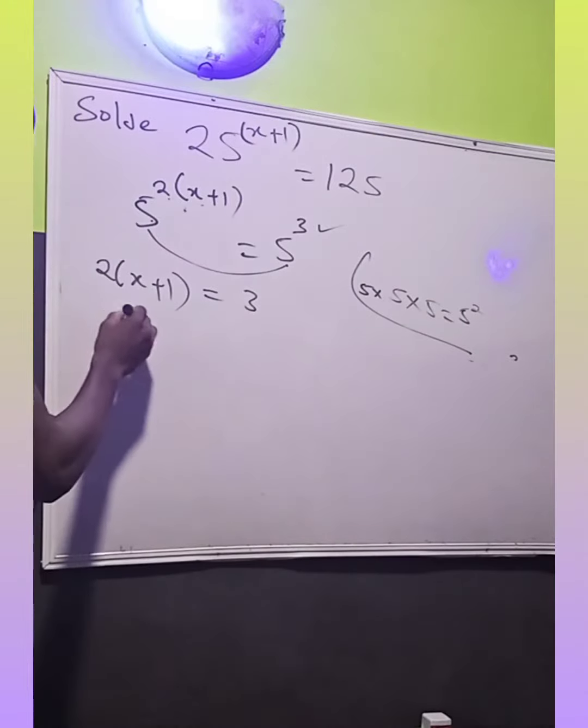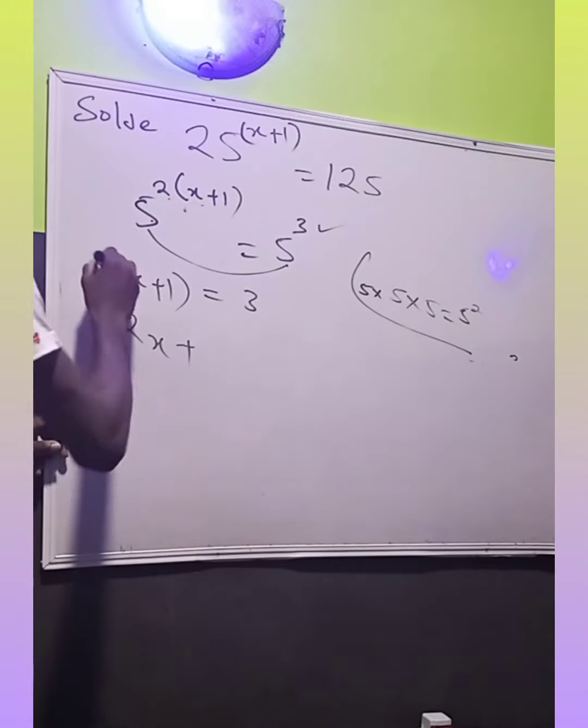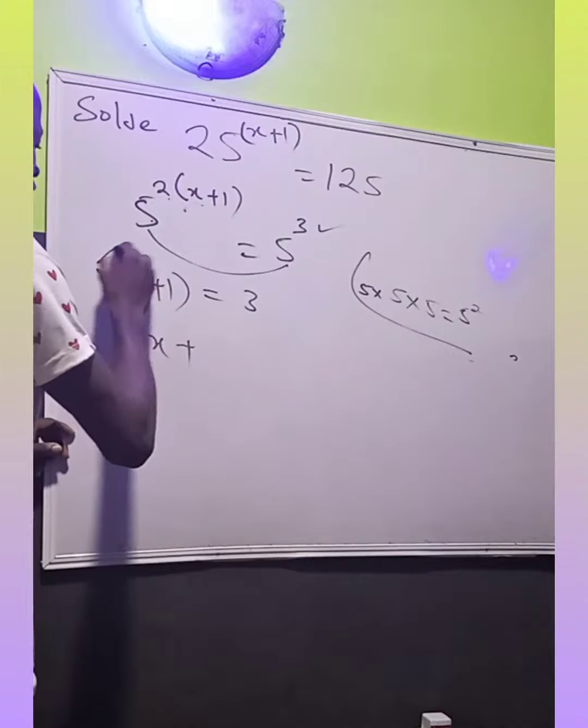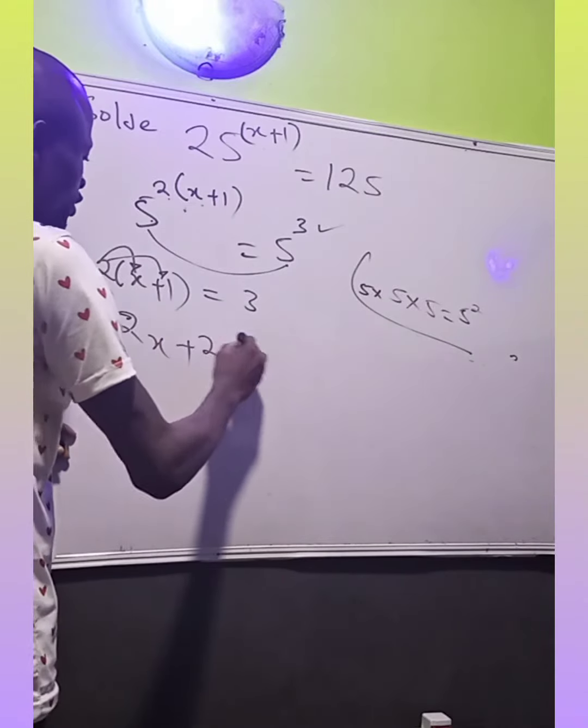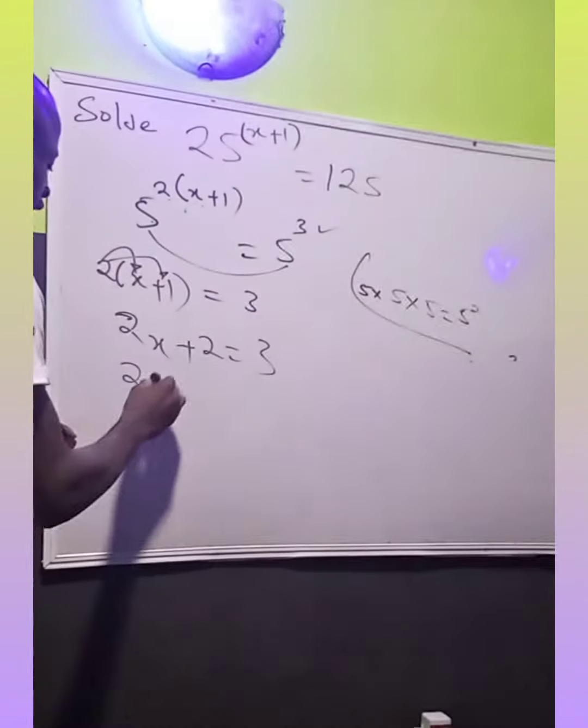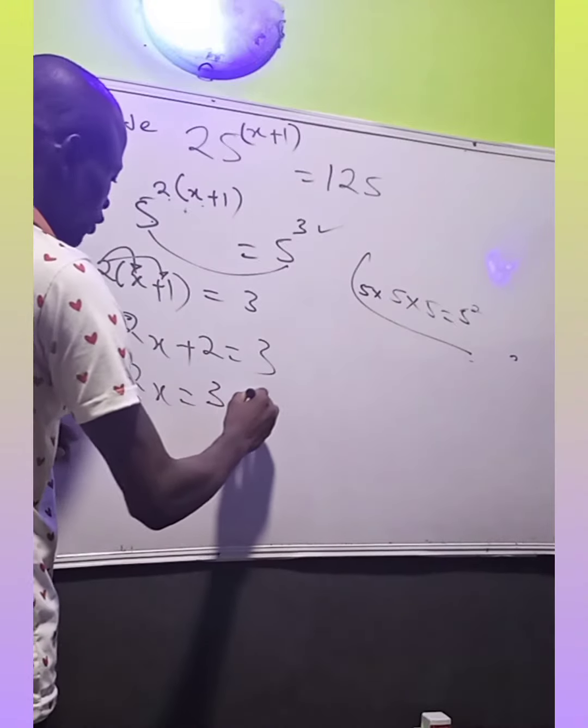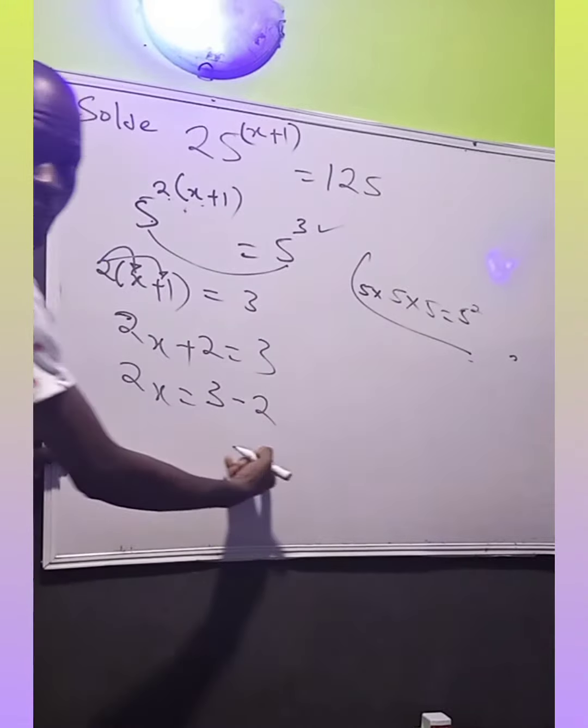So if we have that, we open this bracket, we have 2x plus 2. Then 2 times 1 is 2 equals to 3. So we're going to have 2x equals to 3 minus 2. This crosses to change it to minus.